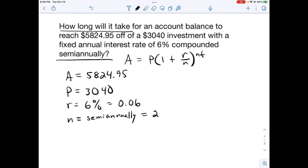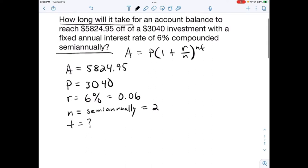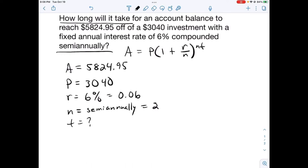Let's plug everything in. 5824.95 equals 3040 times (1 + 0.06/2)^(2t), where n is 2 and t is what we're trying to find.